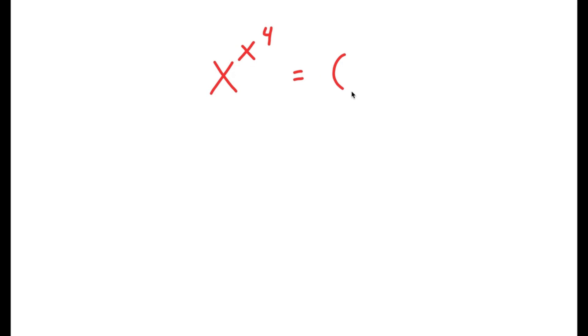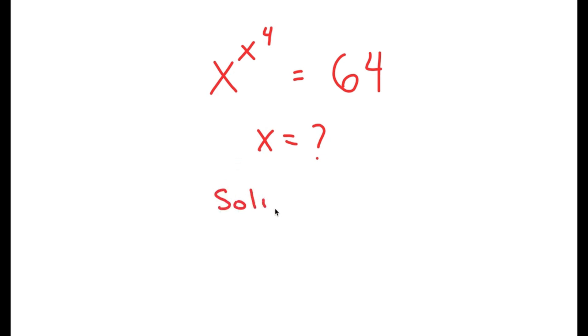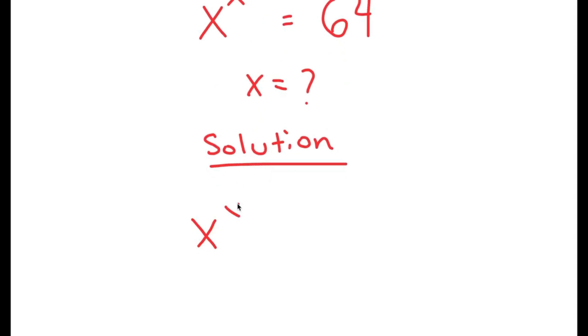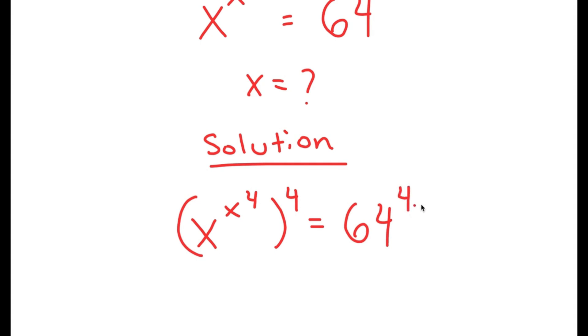In this video, I'm going to solve the equation x to the power of x to the power of 4 is equal to 64. The variable I want to find is x. For my solution, I'm going to first start by taking the power of 4 on both sides. So I get x to the power of x to the power of 4, to the power of 4, is equal to 64 to the power of 4.